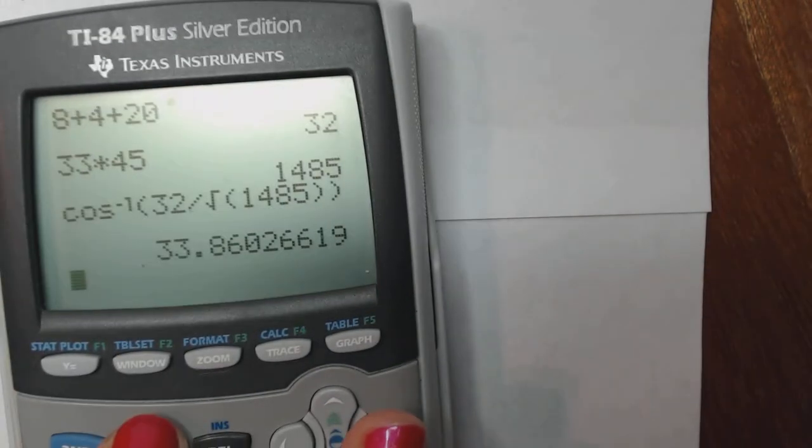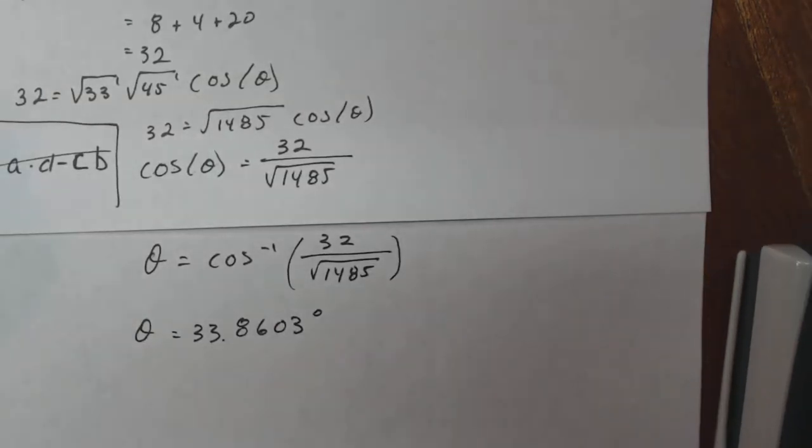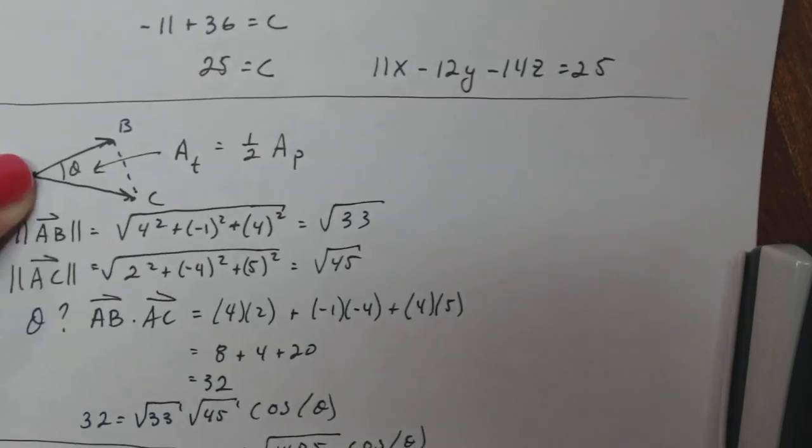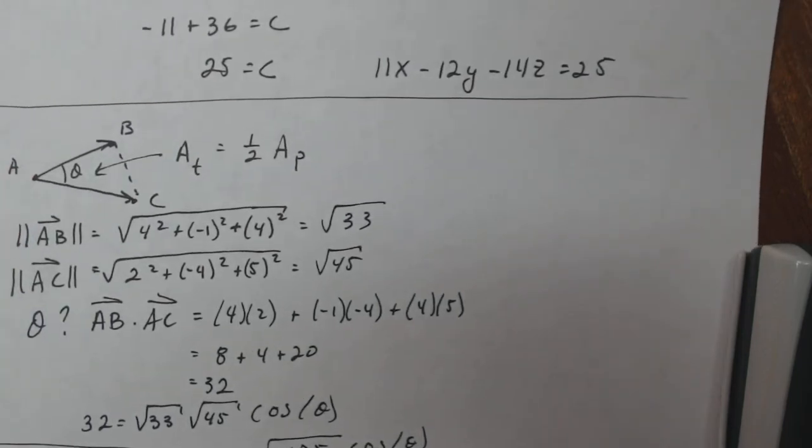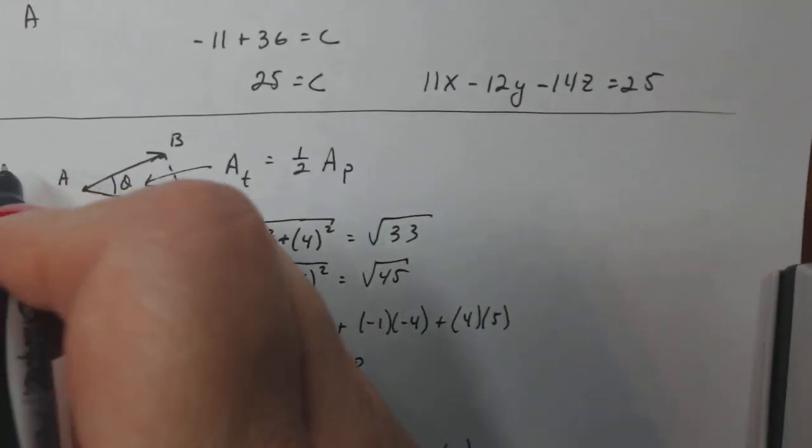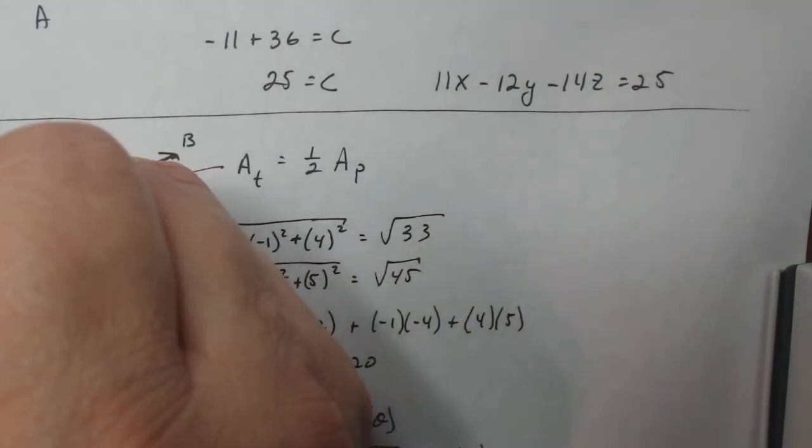Not 33 radians. That doesn't make any sense. So let me check my mode. Yeah, I'm in degree mode, so that's degrees. So the angle between these two vectors is 33.8603. Now that I know that, theta equals 33.8603.